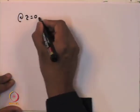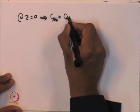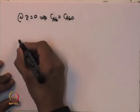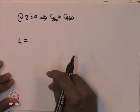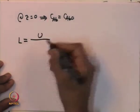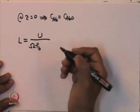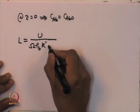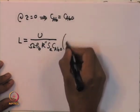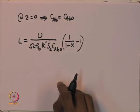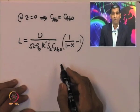We can integrate the simplified expression with the boundary condition that at z = 0, the concentration equals C_AB0. On integration, the length of the reactor as a function of conversion is: L = U / (Ω · ρ_b · k″ · S_A · C_AB0) · [1/(1−X) − 1]. That is the relationship between reactor length, operating parameters, and conversion.